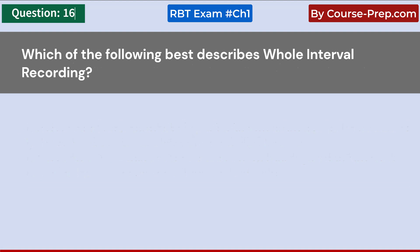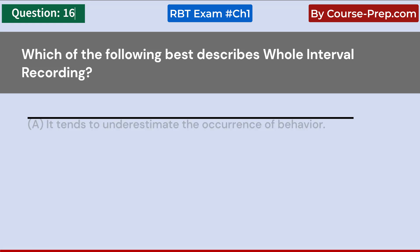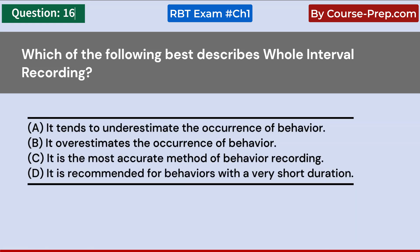Which of the following best describes whole interval recording? A. It tends to underestimate the occurrence of behavior. B. It overestimates the occurrence of behavior. C. It is the most accurate method of behavior recording. D. It is recommended for behaviors with a very short duration. Answer A: It tends to underestimate the occurrence of behavior.